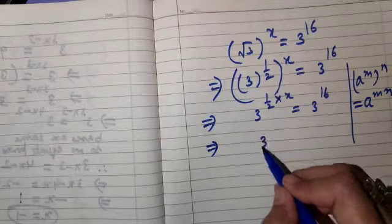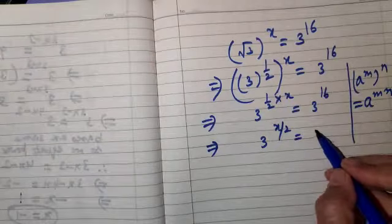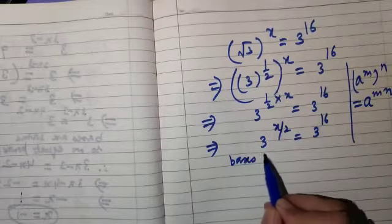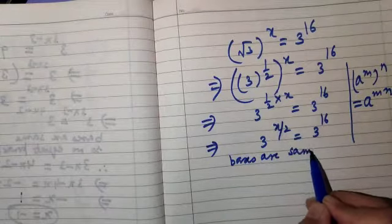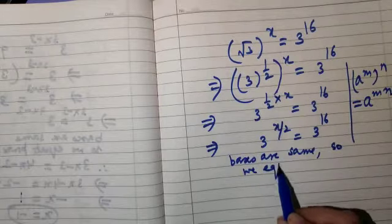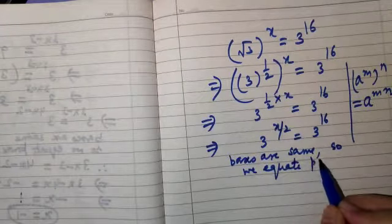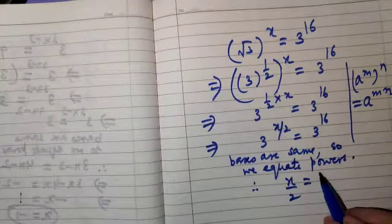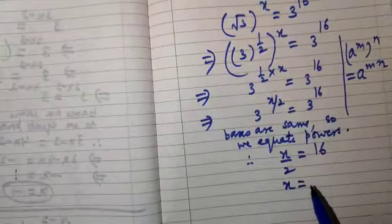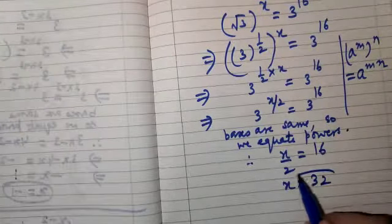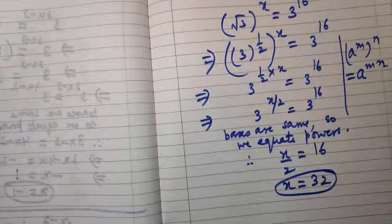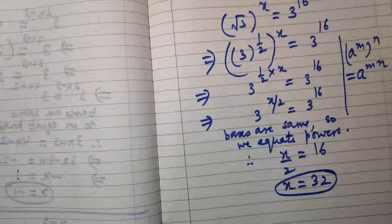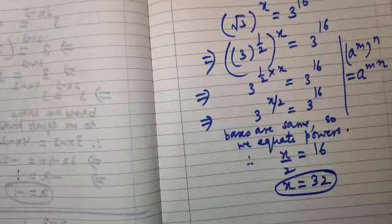So 3 raised to the power x upon 2 equals 3 raised to the power 16. Bases are the same, so we equate powers: x upon 2 equals 16, and therefore x equals 32. I hope you have understood questions of this type. Practice such questions. Have a nice day. Bye-bye.